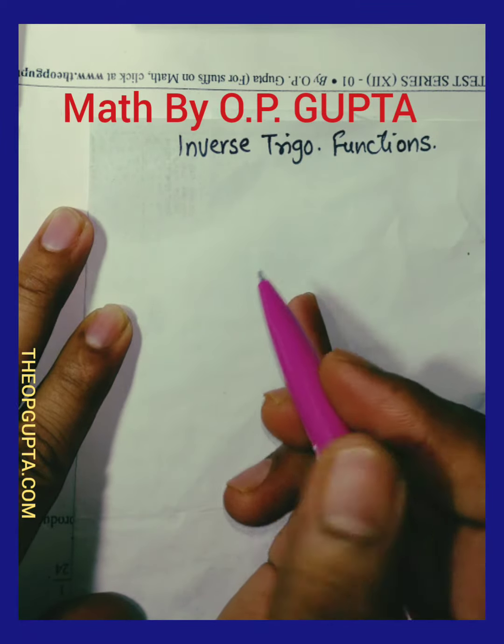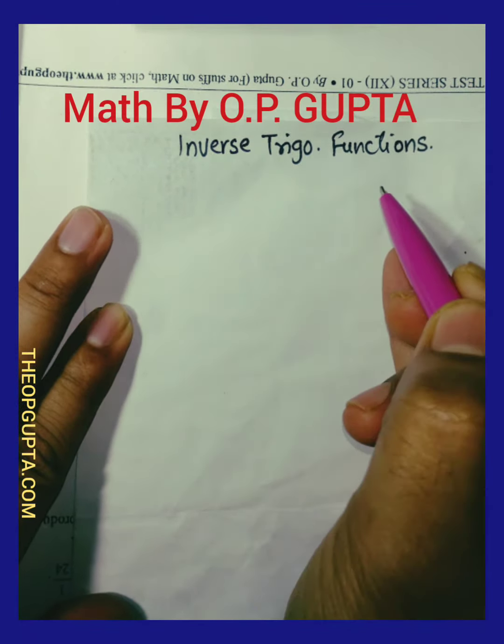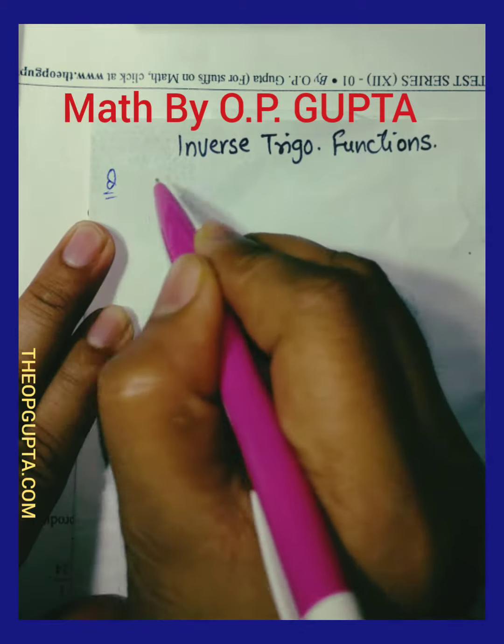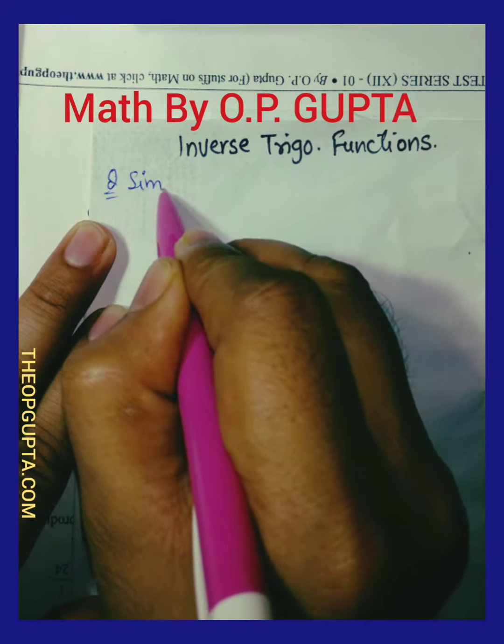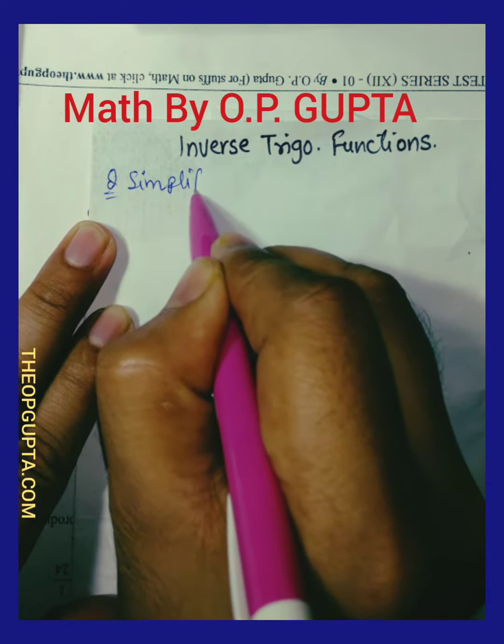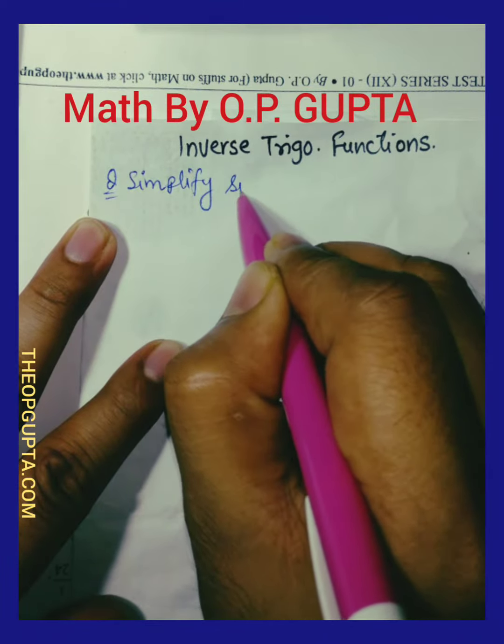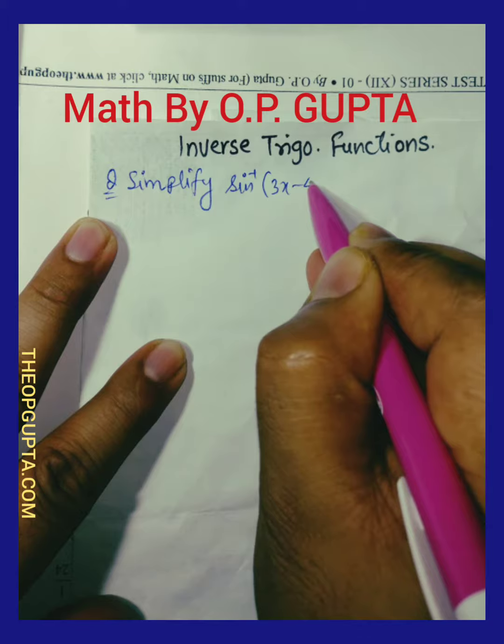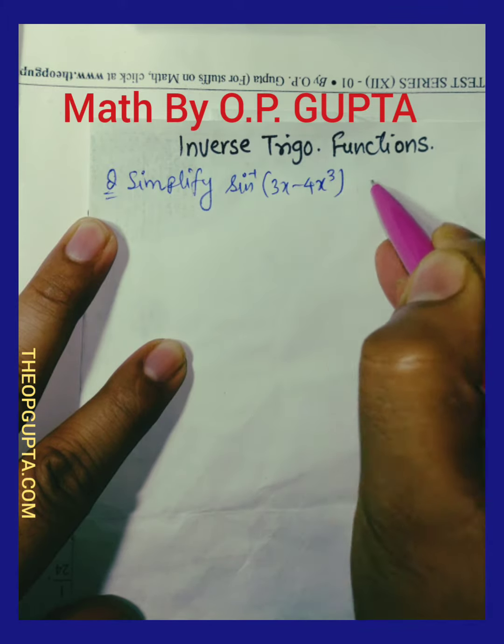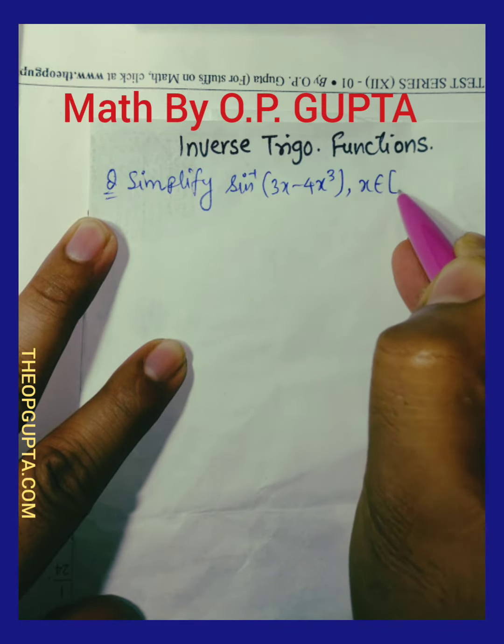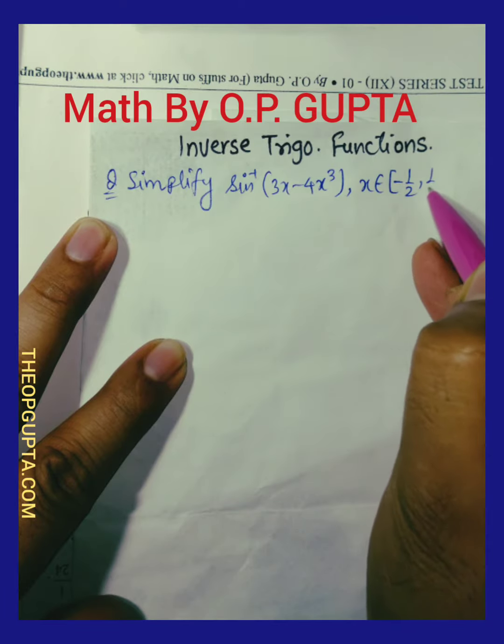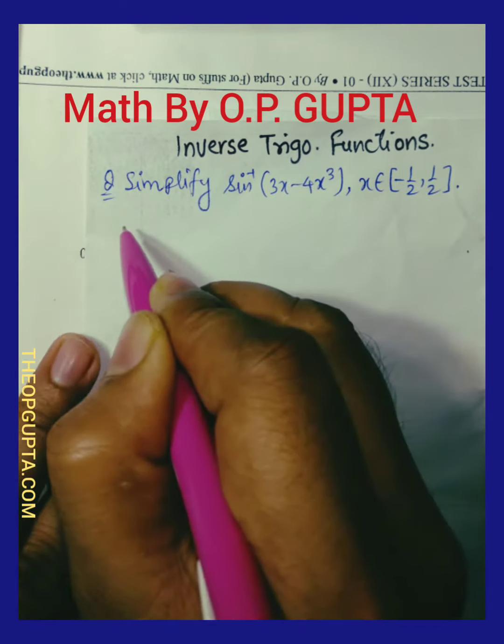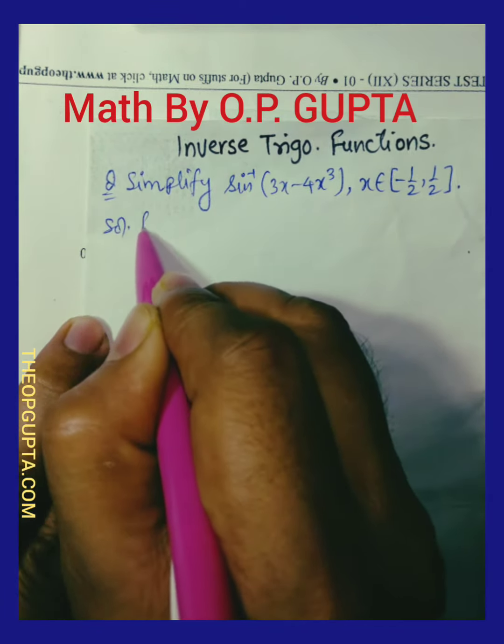Hello students, once again I am here with inverse trigonometric functions. I will be taking this question: simplify sine inverse of 3x minus 4x cube, if x belongs to the closed interval minus half to half.